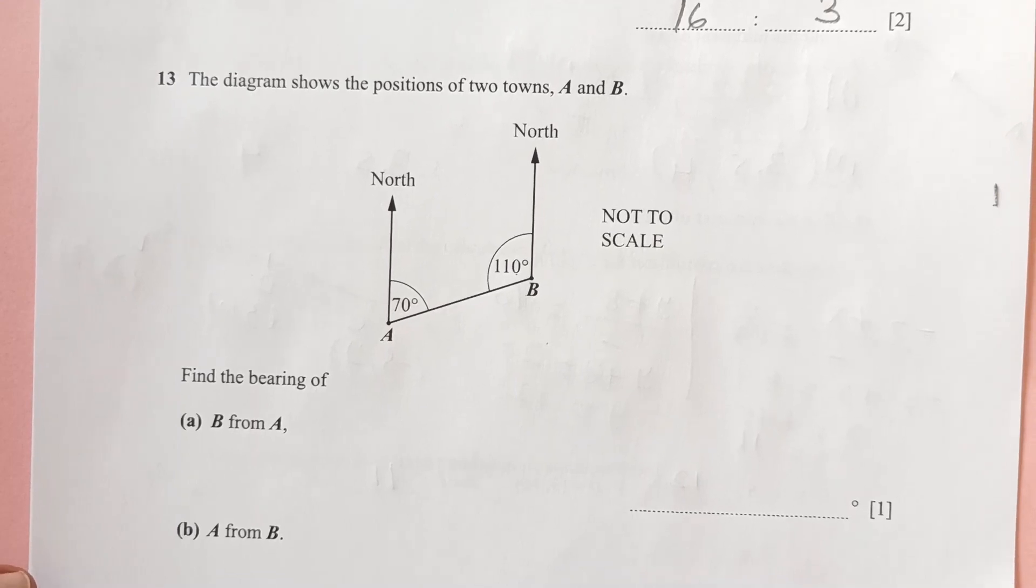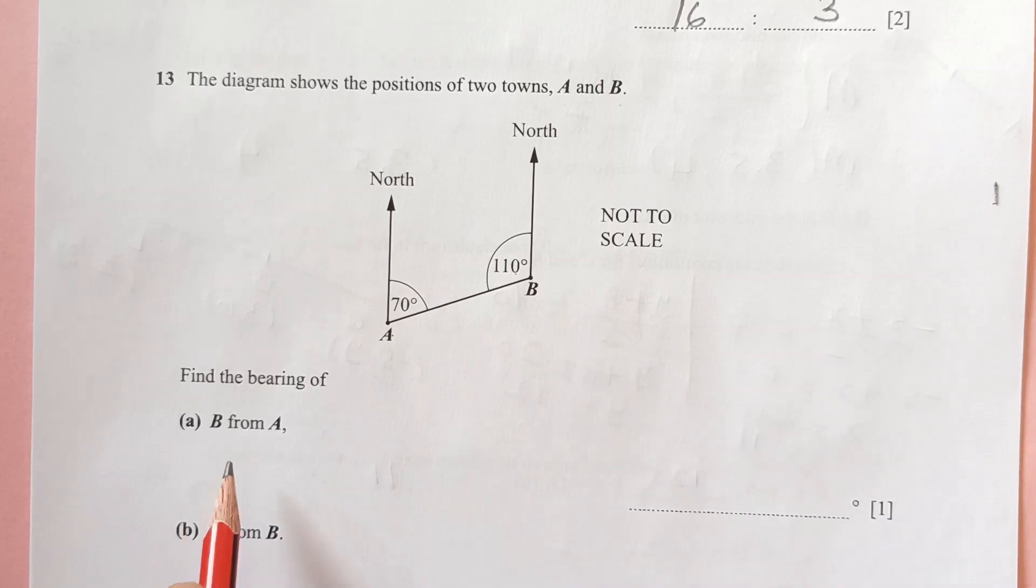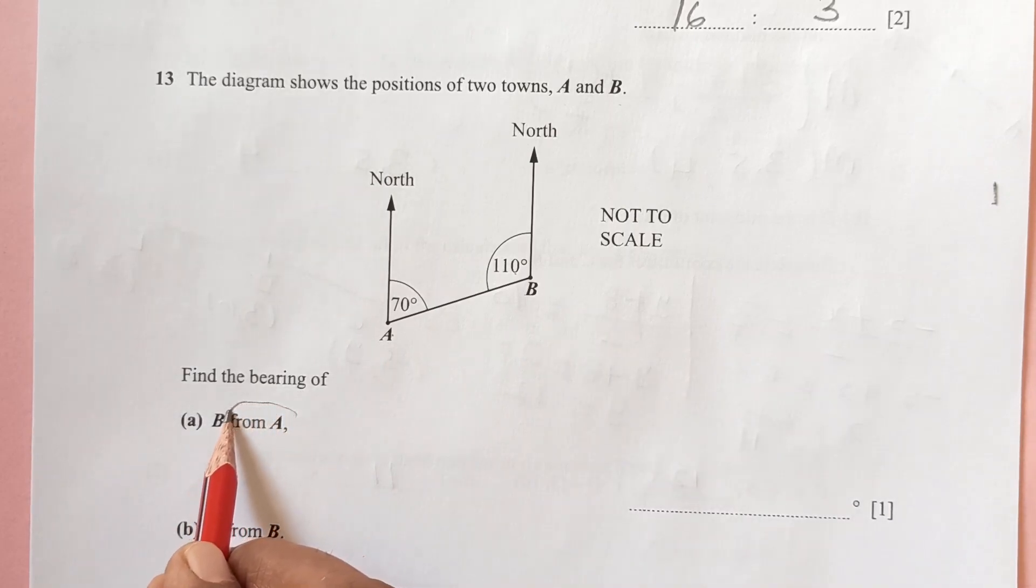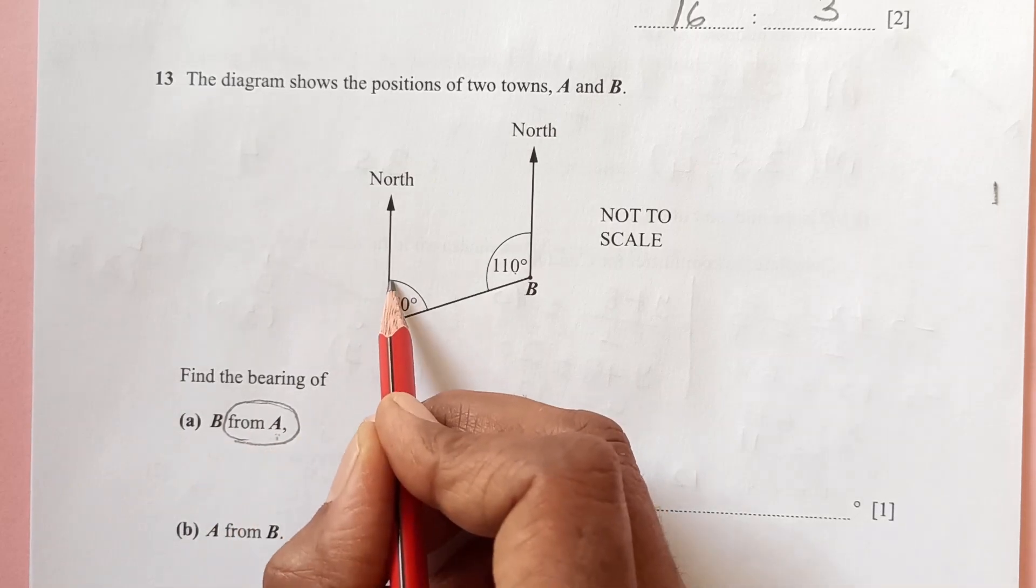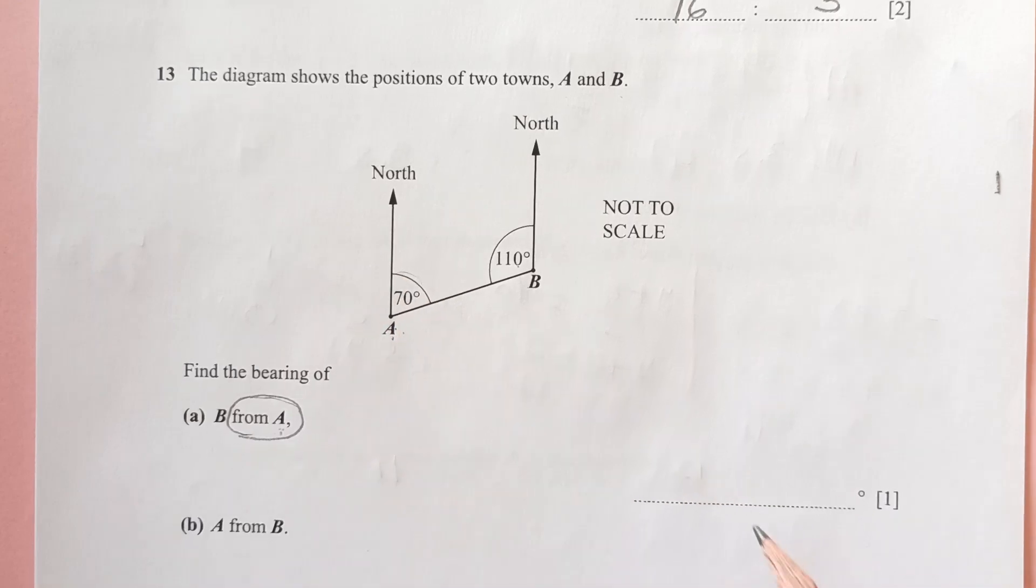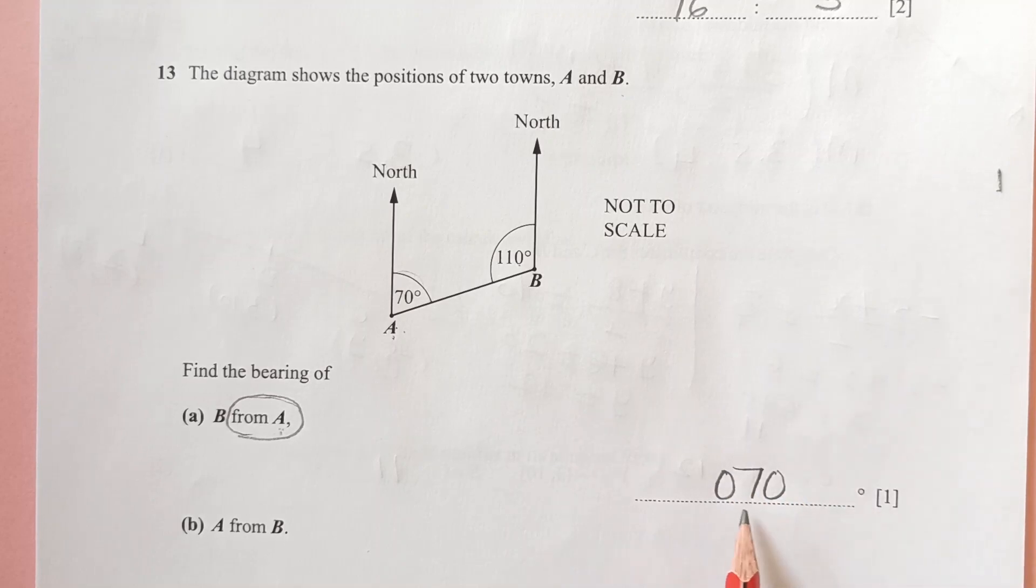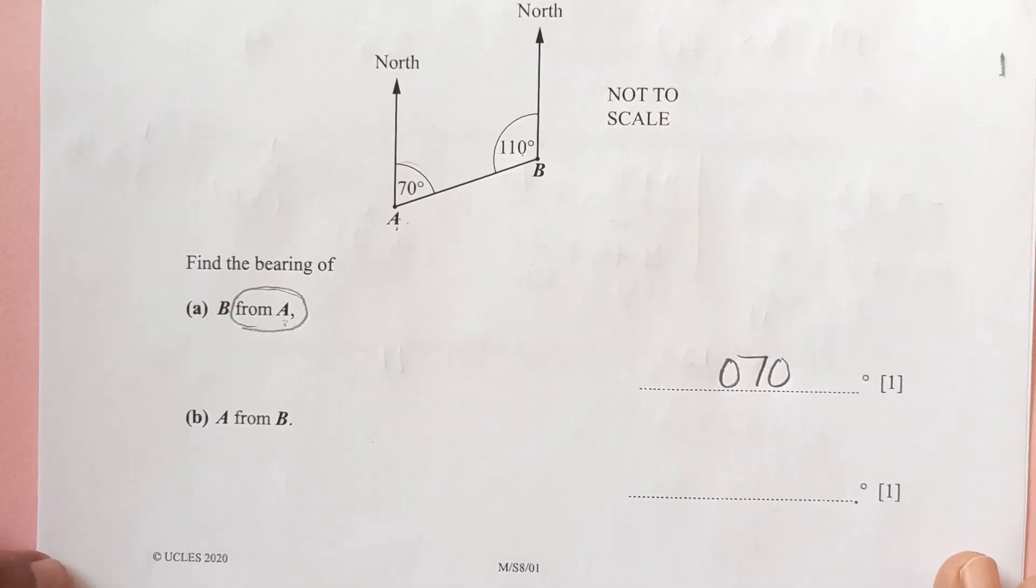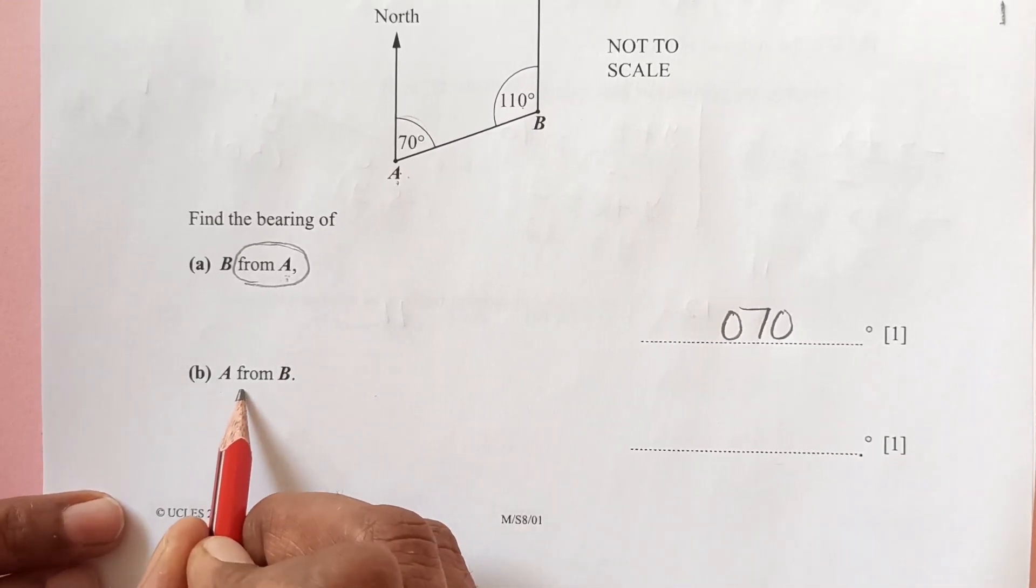Number 13: the diagram shows the position of two towns A and B. We have town A here, town B here. Find the bearing of B from A. I always give this clue: circle from that gives you the point where you need to go, A. So from A to the north line, this is 70, and we will write down 070 degrees because bearing should be written as three-digit angle.